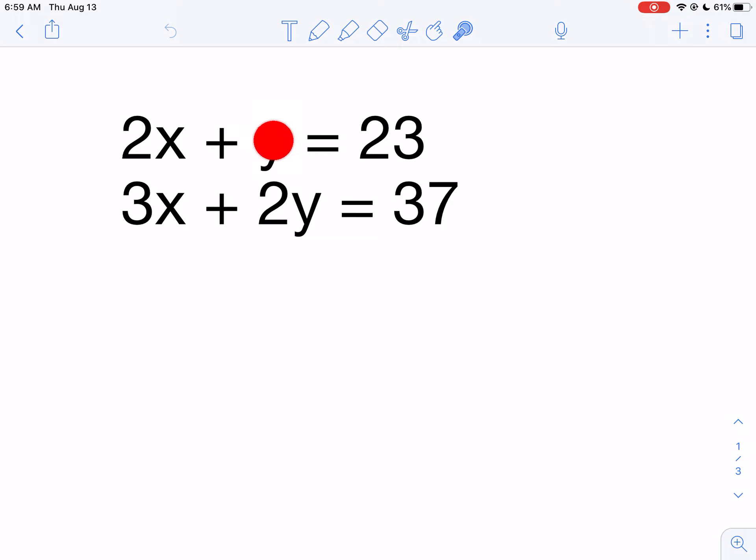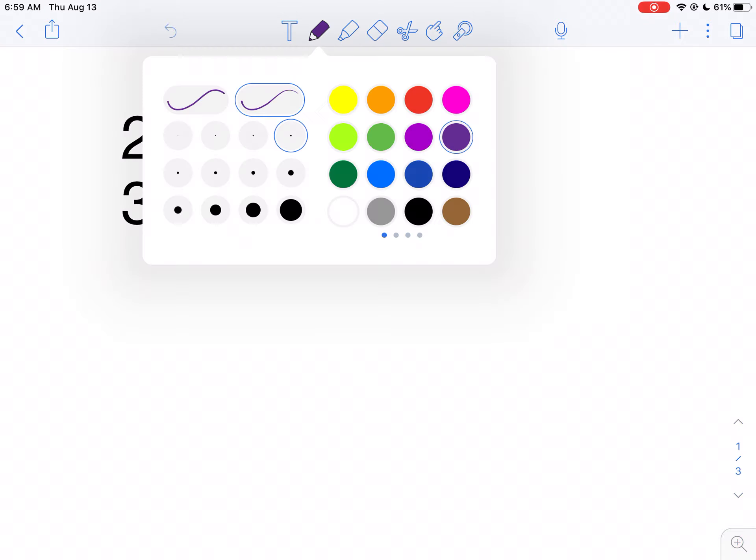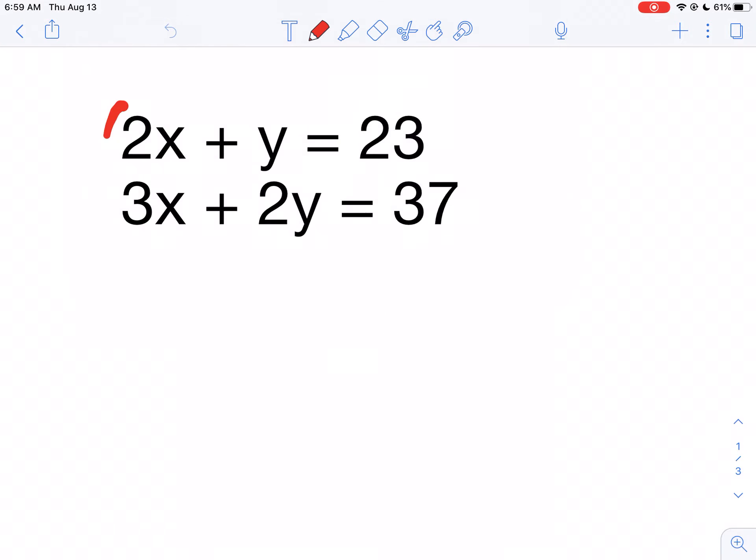To make these two y's the same, I would multiply the first equation by 2 so I get 2y. But I don't want them to be the same, I want them to be opposite. So what I'm going to do is I'm going to multiply the first equation by negative 2.